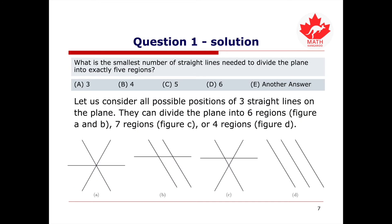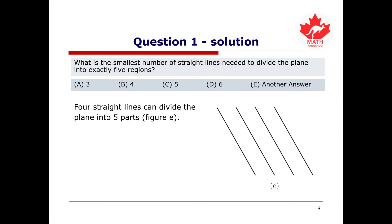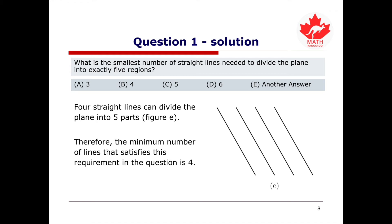Let us consider all possible positions of 3 straight lines on the plane. Three straight lines can divide the plane into 6 regions (figures A and B), 7 regions (figure C), or 4 regions (figure D). Three lines can only divide the plane into 6, 7, or 4 regions, but not 5 regions. Therefore, we need at least 4 lines. Four straight lines can divide the plane into 5 regions, as shown in figure E. Therefore, the minimum number of lines is 4, and the correct answer is B.